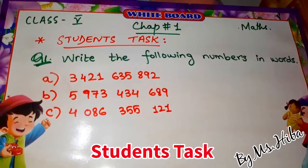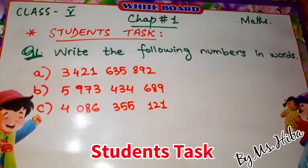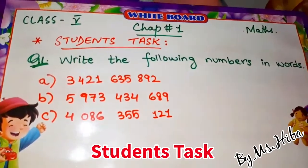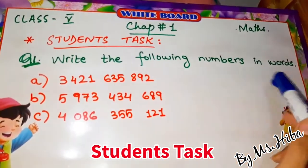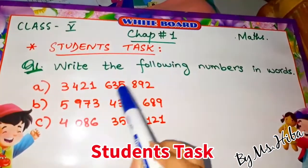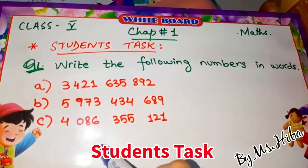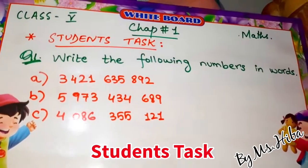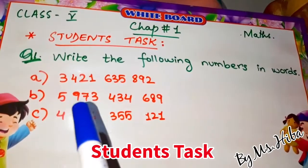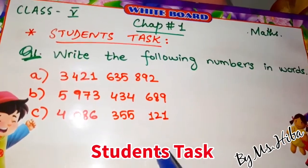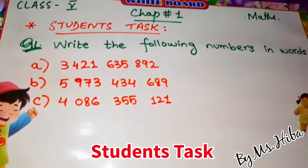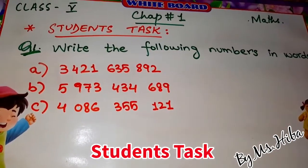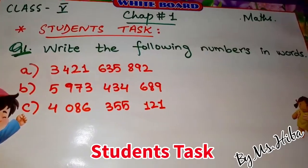Now students, you have to do these questions right now in your notebook. Write the following numbers in words. You don't need to put the numbers in the place value chart — just write the words for each number. You have 10 minutes to complete this work. Your time starts now.